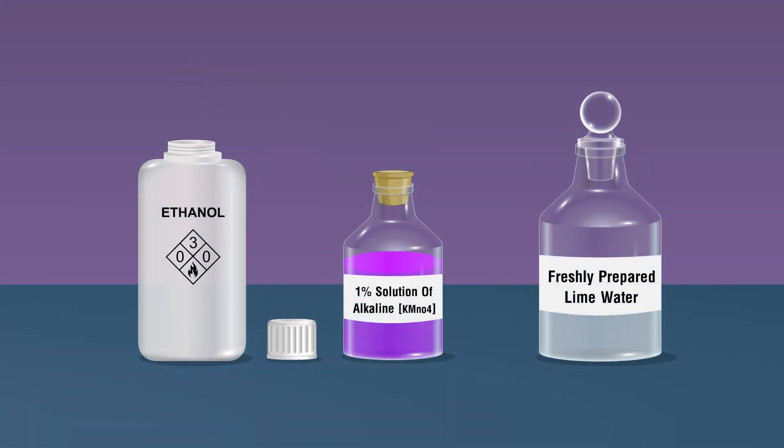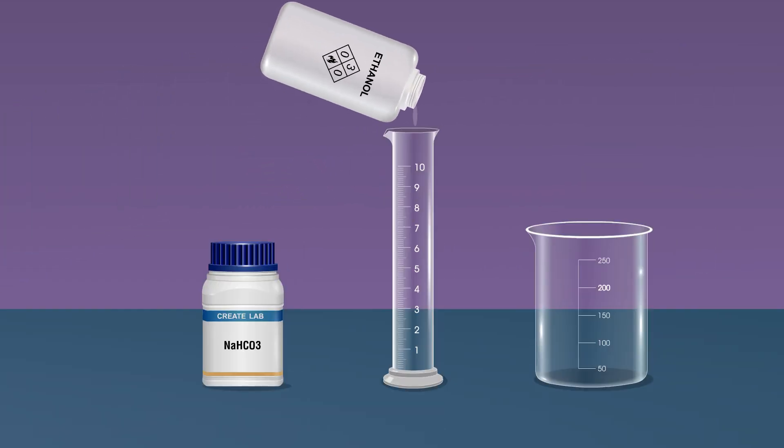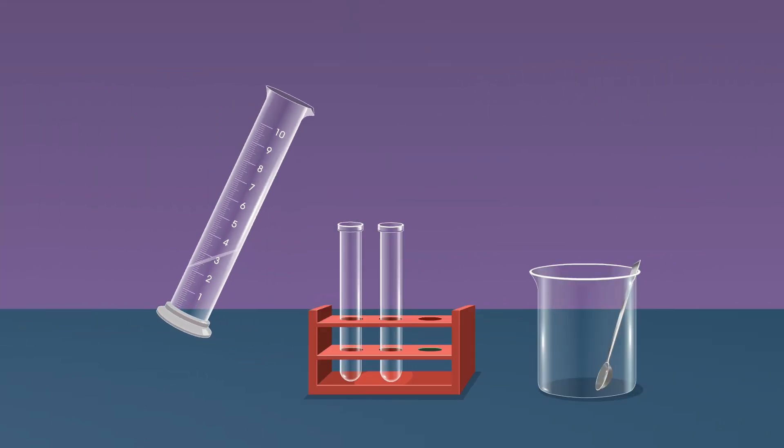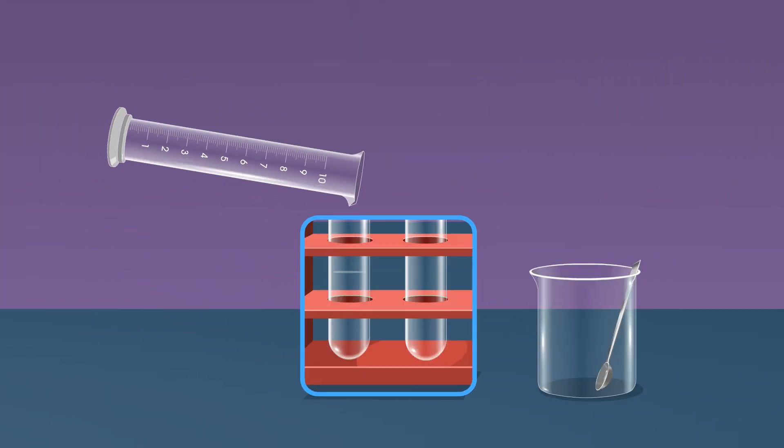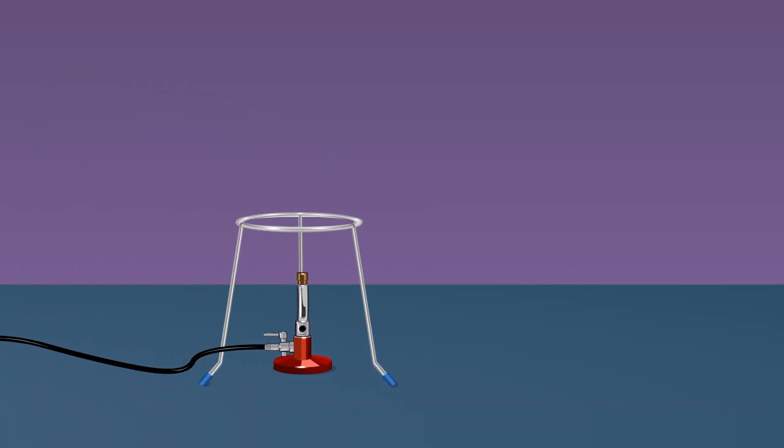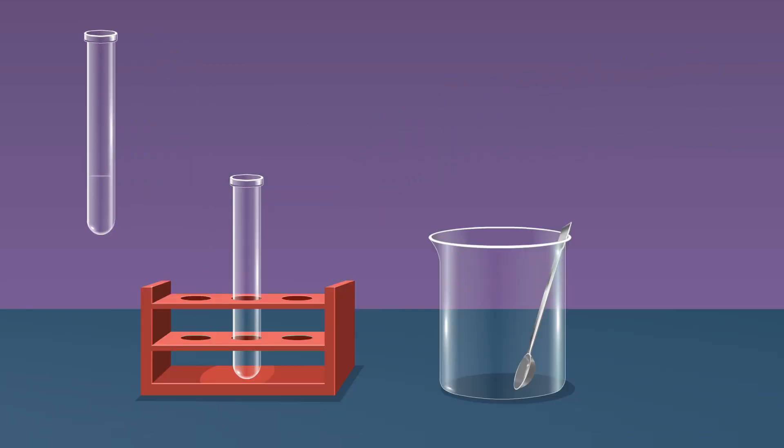Take 3 ml of ethanol in a boiling tube using a measuring cylinder. Place the boiling tube into the beaker, place a stand close to the tripod, put a beaker containing water above the wire gauze, clamp the boiling tube, and warm the solution in the boiling tube.